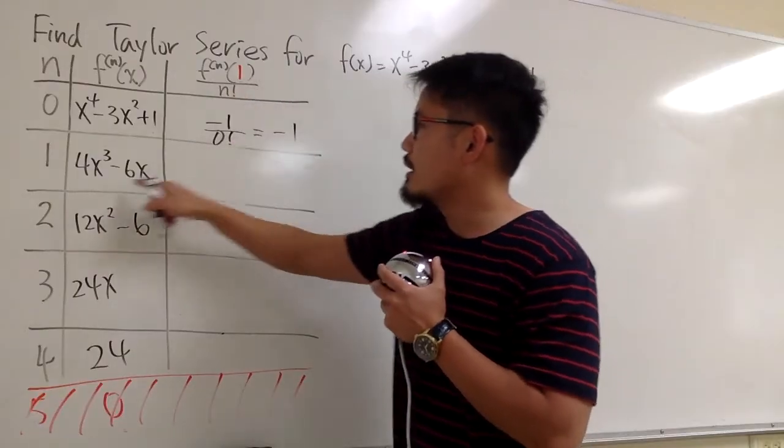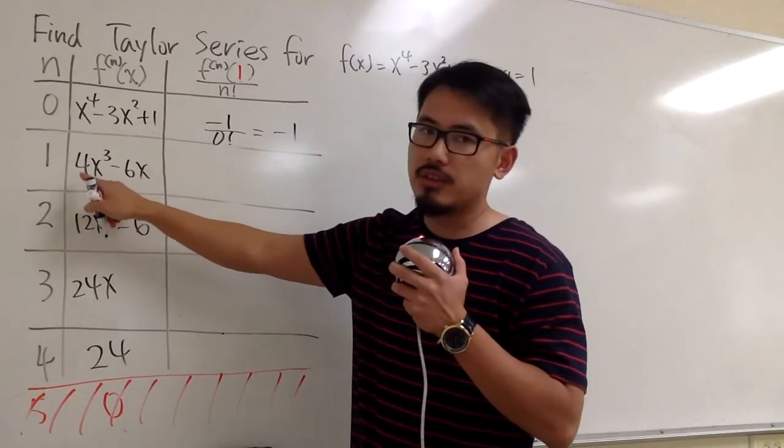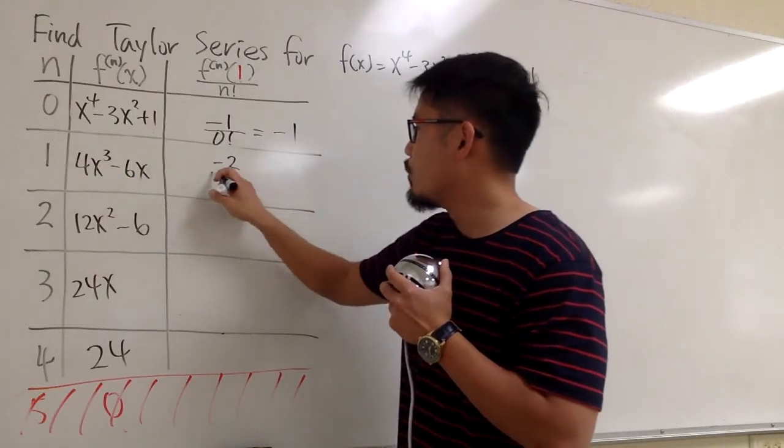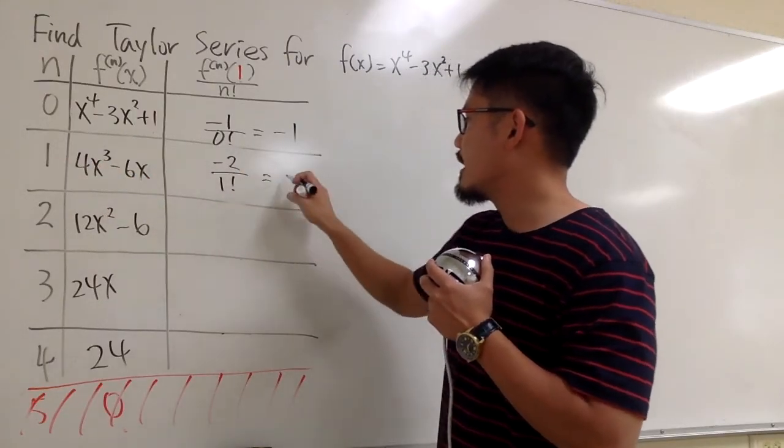Next, we plug in 1 into here and here. It's pretty much just 4 minus 6, so we have negative 2. And then divide it by 1 factorial, and that's going to be negative 2.